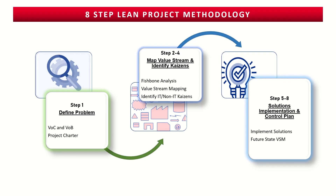The first thing the team did was follow an eight-step lean project methodology. Step one was to define the problem, step two was to map the value stream and identify the kaizens, and steps five to eight were the solutions that were implemented, along with control plans.